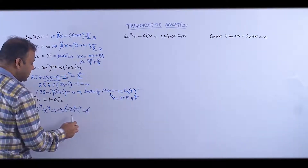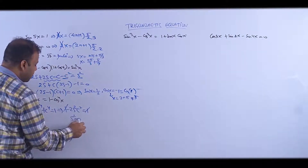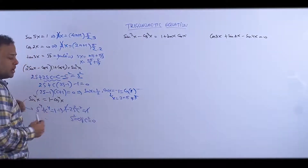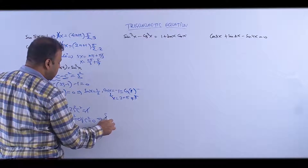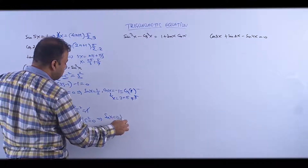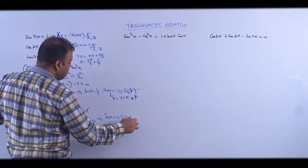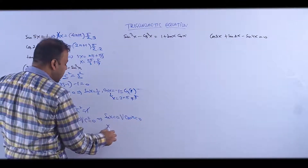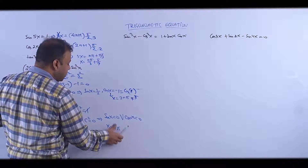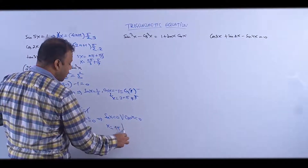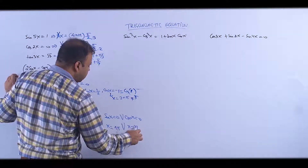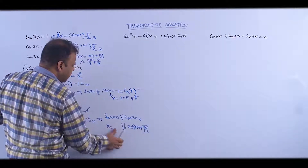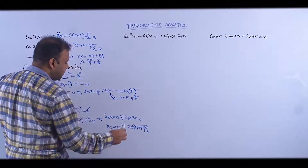1 and 1 cancel ho gaye. So either sin²x = 0 or cos²x = 0 — meaning sin(x) = 0 or cos(x) = 0. sin(x) = 0 gives x = nπ, and cos(x) = 0 gives x = (2n+1)π/2. Dono ko n nahi likhte, ek ko m likh dete hain.